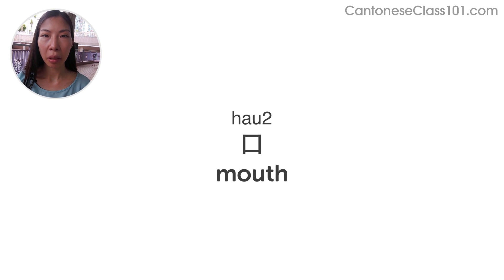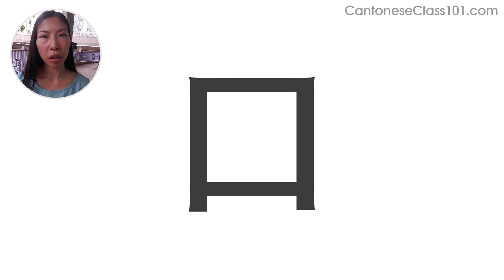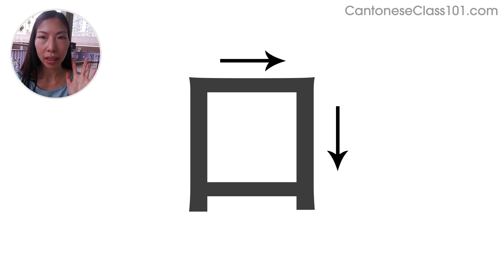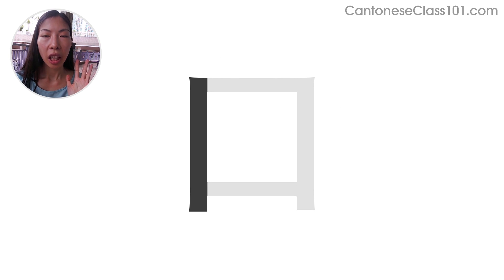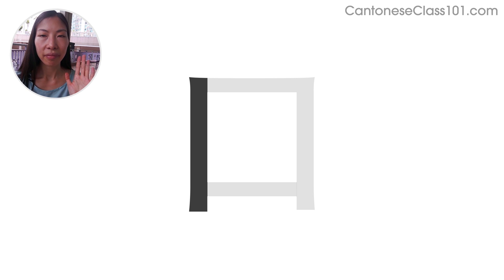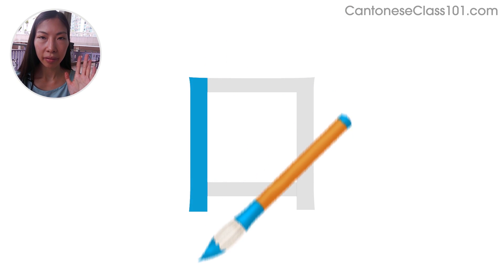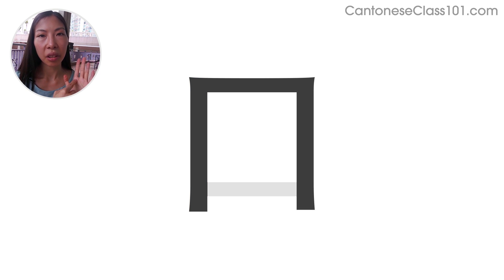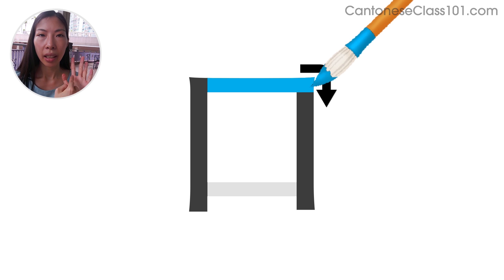Finally, let's see an example. Let's try to write the character 口, meaning 'mouth.' According to the rules, we start from left to right and top to bottom. First, we start with the left vertical stroke — the brush begins at the top, then falls downward. Secondly, it's a turning stroke starting from left towards right, then turning 90 degrees to fall downward.